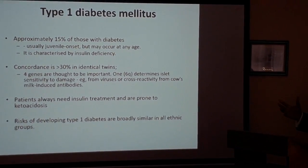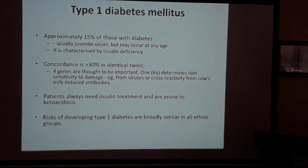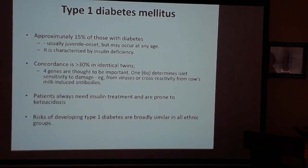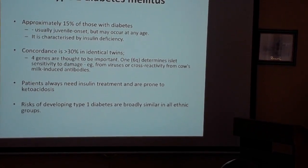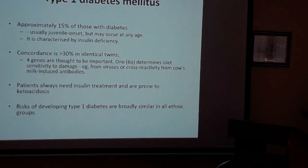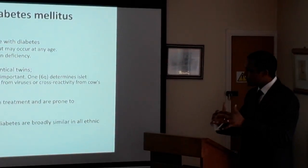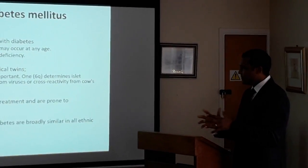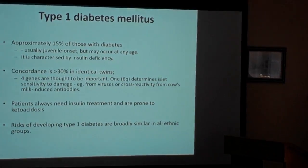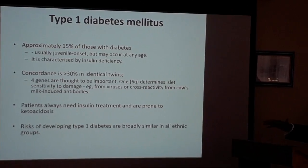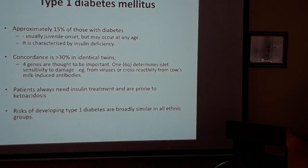Ten to twenty years ago, ketoacidosis was a number one killer. The blood sugar goes high but glucose isn't actually entering the cells where it's needed, because insulin is what drives glucose from the bloodstream into the body's cells to make energy. The risk of Type 1 diabetes is broadly similar across all peoples of the world.